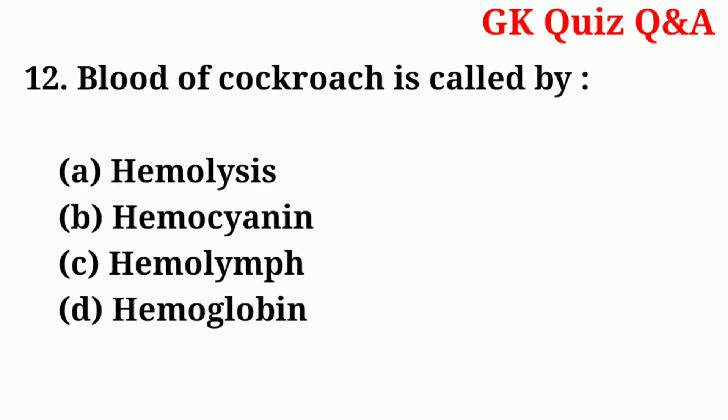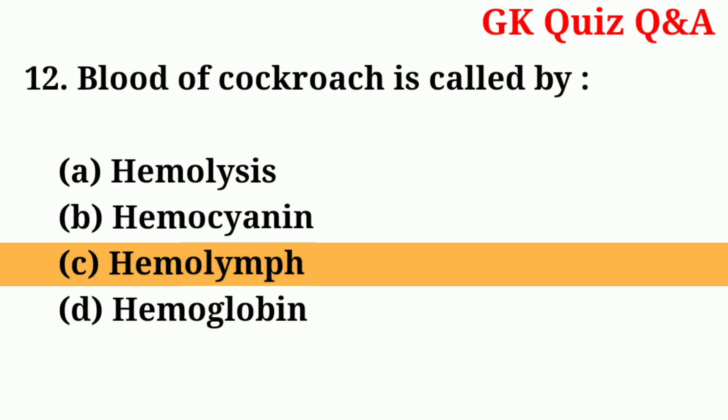Number twelve: the blood of cockroach is called — answer: number C — hemolymph.